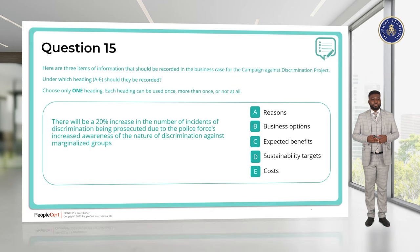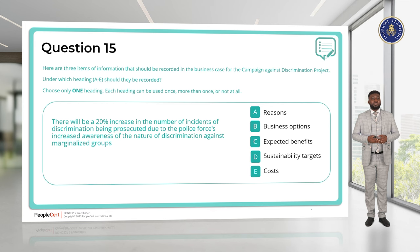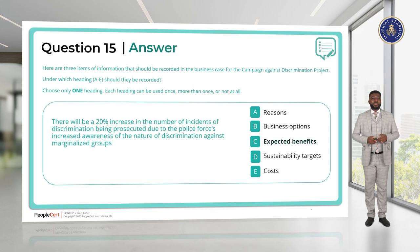Question 15. There will be a 20% increase in the number of incidents of discrimination being prosecuted due to the police force's increased awareness of the nature of discrimination against marginalised groups. Here we have something measurable — as a result of what we are doing, we know there will be a 20% increase in prosecutions. This measurable increase belongs under Expected Benefits. The answer is C.